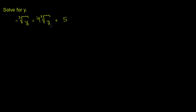We're asked to solve for y. We're told that the negative of the cube root of y is equal to 4 times the cube root of y plus 5. In all of these, it's helpful to isolate the cube root — isolate the radical in the equation — and then solve from there. So let's see if we can isolate the radical.